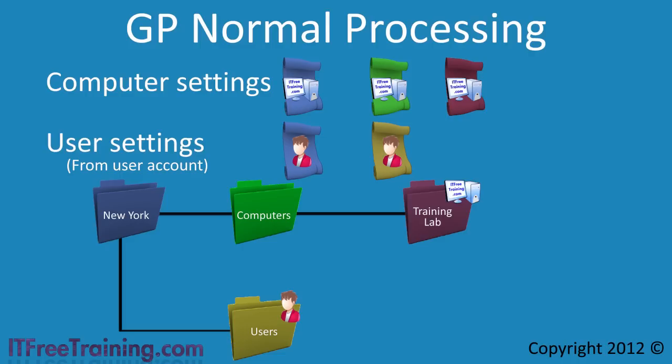The problem occurs when you want to deploy a computer with particular settings — for example, a kiosk or a training computer. In either case, it is unlikely that you want the group policy settings for that user applied to the computer. On a training computer, settings like mapped drives or desktop customizations would probably not be required. To allow group policy to be configured in a way that will work for training and kiosk computers, group policy loopback processing can be used.